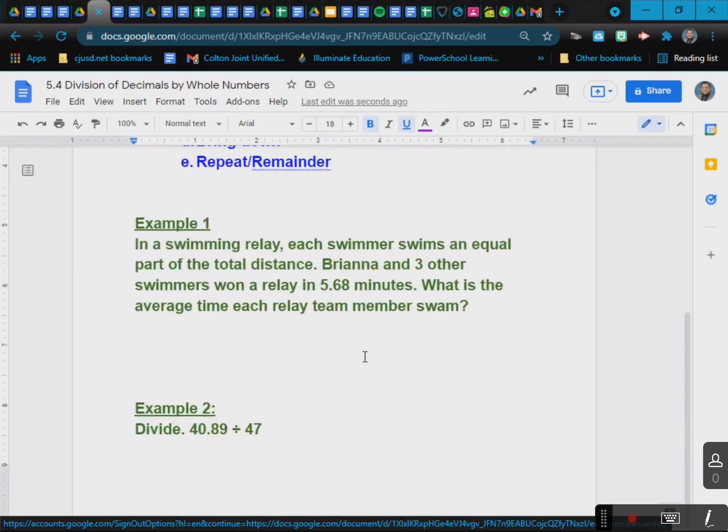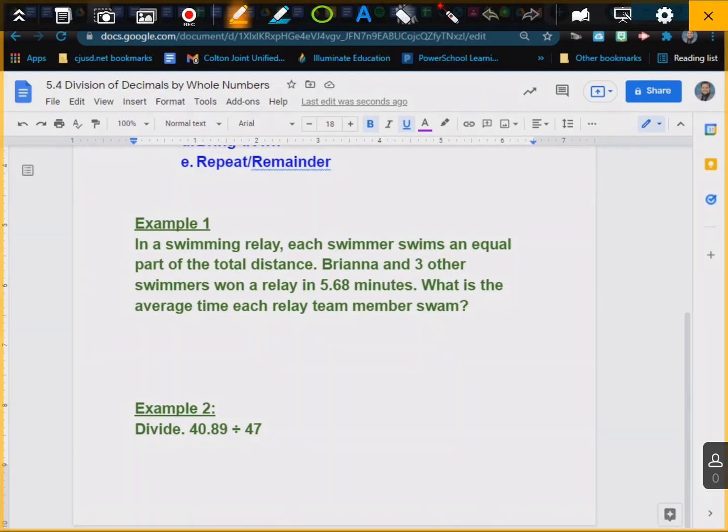Okay, and if you need to stop and pause to write the examples, please feel free to do so. So the first example: in a swimming relay, each swimmer swims an equal part of the total distance. Brianna and three other swimmers won a relay in 5.68 minutes. What's the average time each relay team member swam?